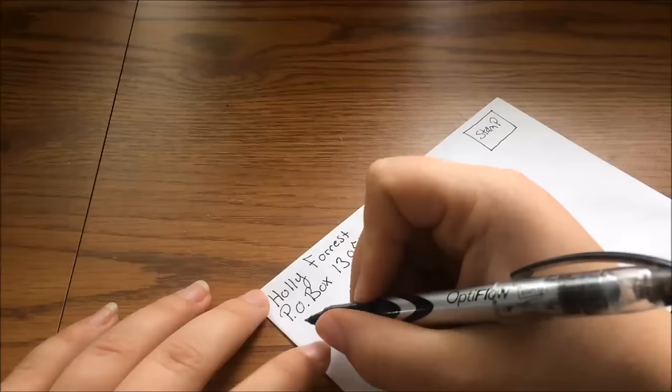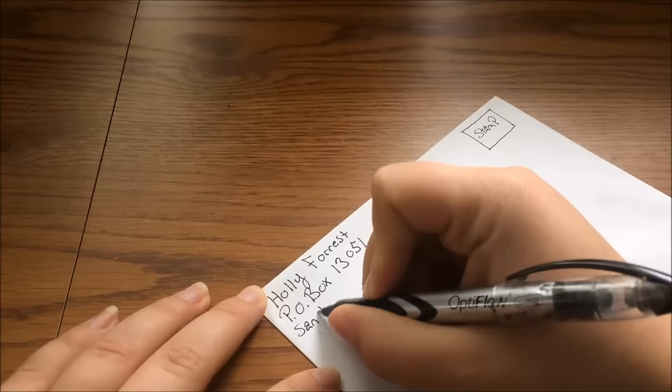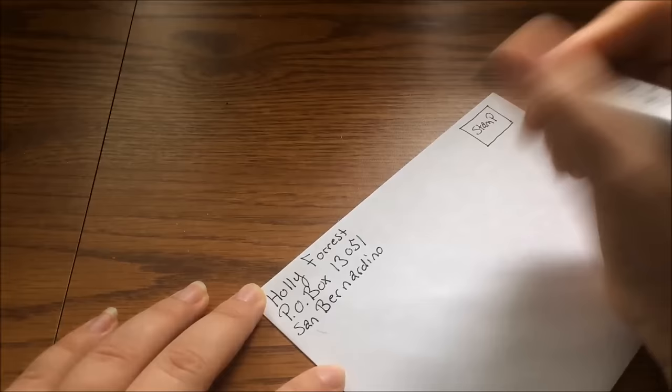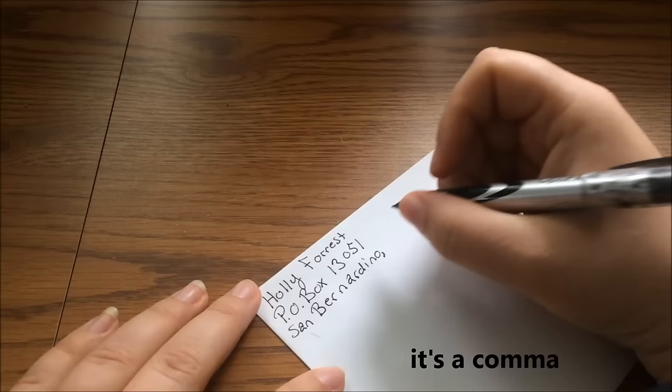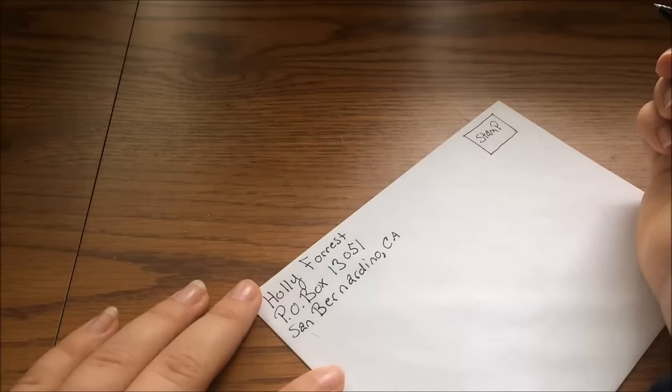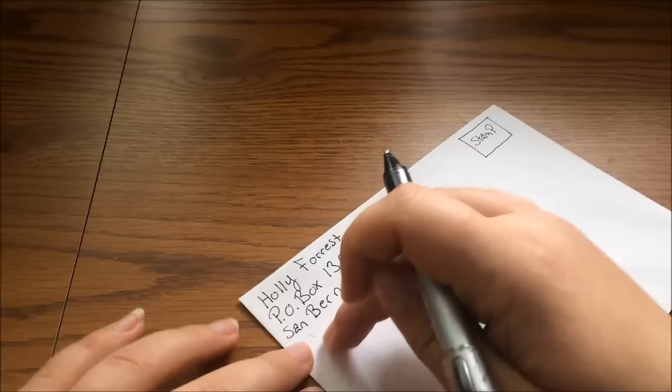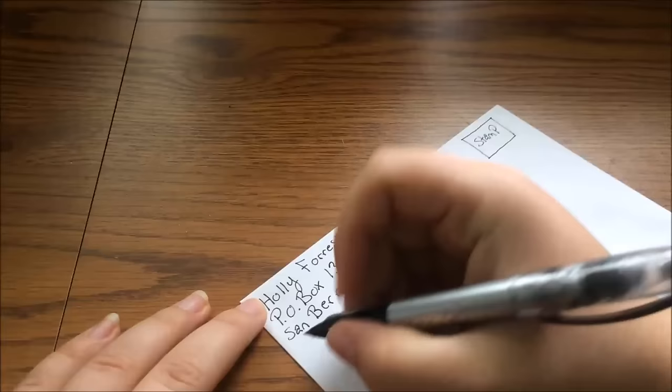And then after that will be her city, which is San Bernardino. And then you want to make sure you put a little comma. And then we're going to put the initials of the state, which her state is California. So that is CA. If you don't know the initials for your state, you can just write it out. But I would suggest dropping that down to the next line and writing out your state. And then you can put the postal code.